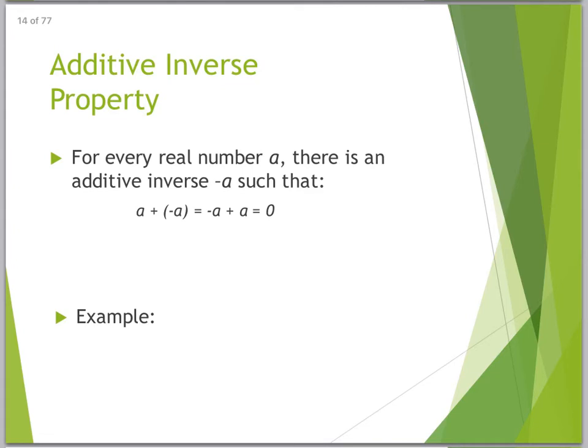Alrighty, additive inverse property. This relies on an understanding of opposite numbers. For every real number A, there is an additive inverse, or the opposite number, opposite of A, such that if I add them together, I get 0. An example in numbers would be 4 plus its opposite of negative 4, oddly enough, equals 0.